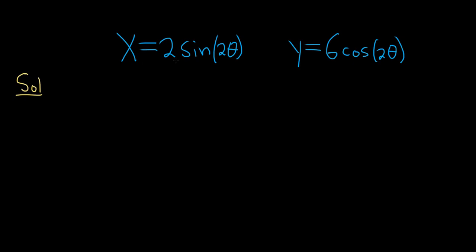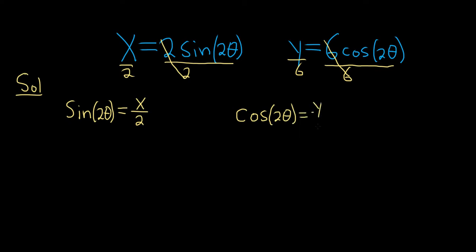So to solve the first equation for sine of 2 theta, we'll just divide by 2. That will give us sine of 2 theta equals x over 2. Over here with the y, same thing, except we divide by 6. That gives us cosine of 2 theta equals y over 6.